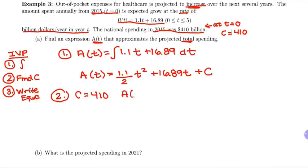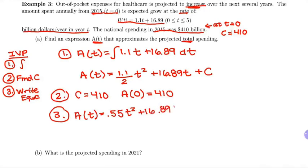Another way of thinking about it is the total amount out-of-pocket at year zero was $410. So my last step is to write my final equation. I'm going to simplify when I write it here. So 1.1 divided by 2 is just going to be 0.55 T squared. Then I have plus 16.89T plus my C value. The initial value is 410. So when I plug in 0 for 2015, I do get 410.